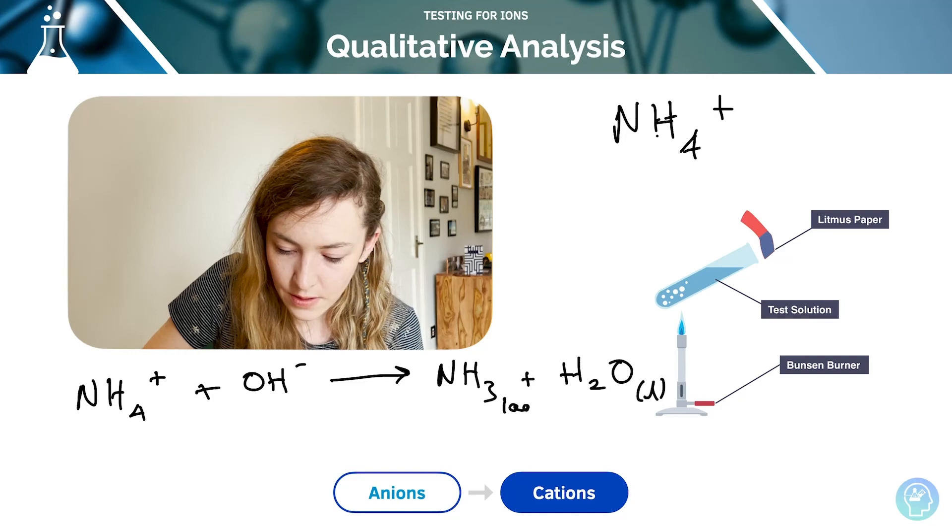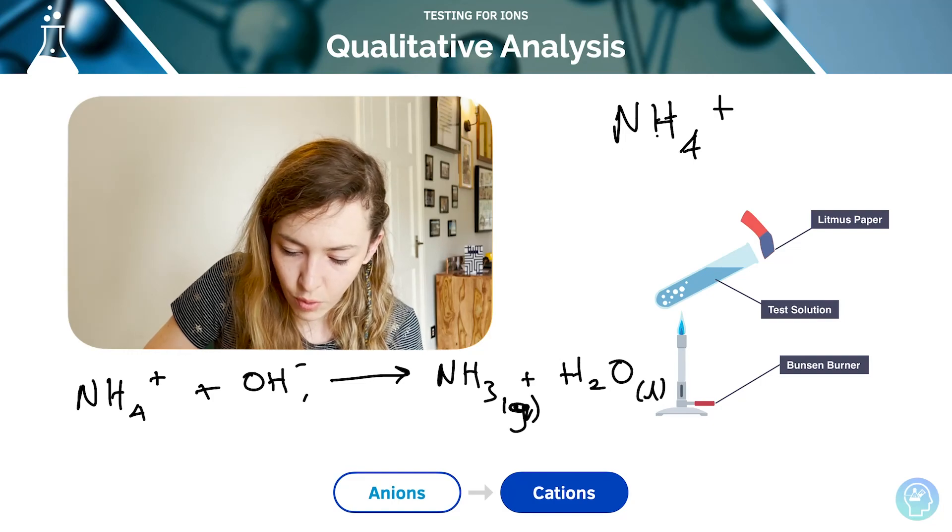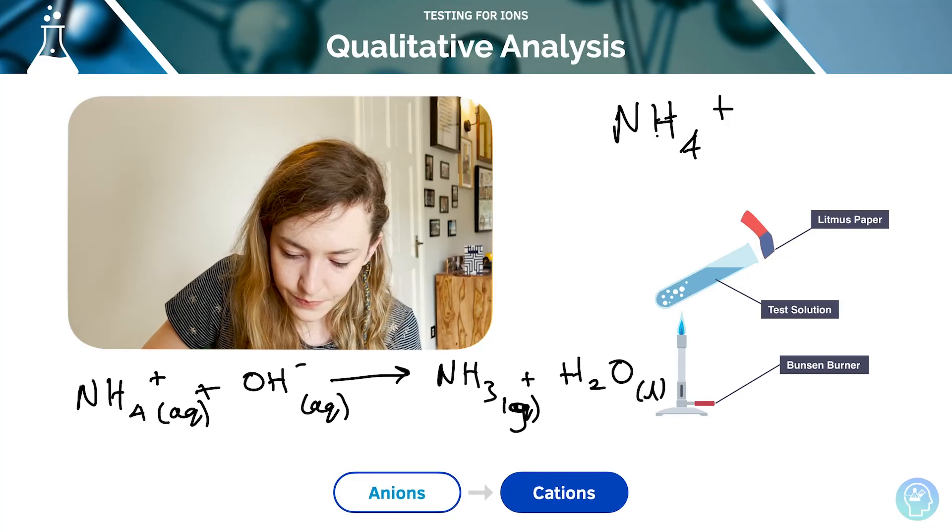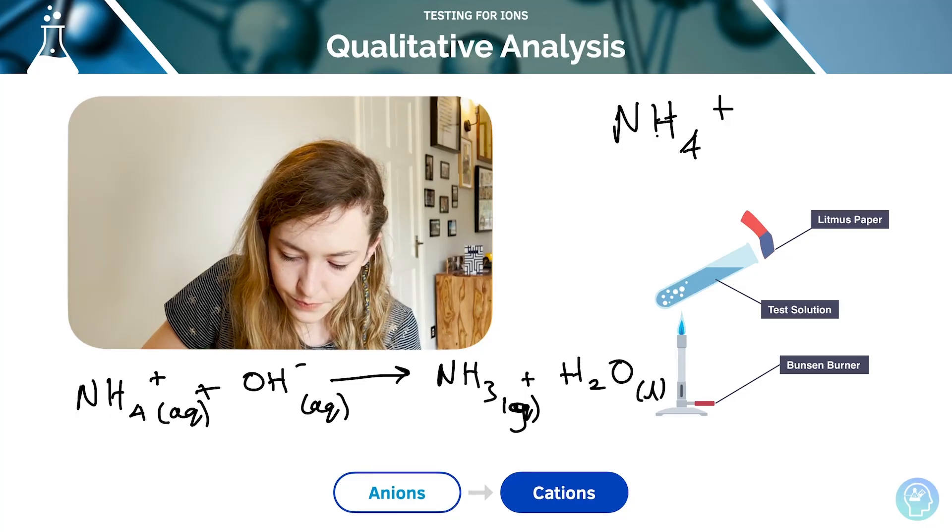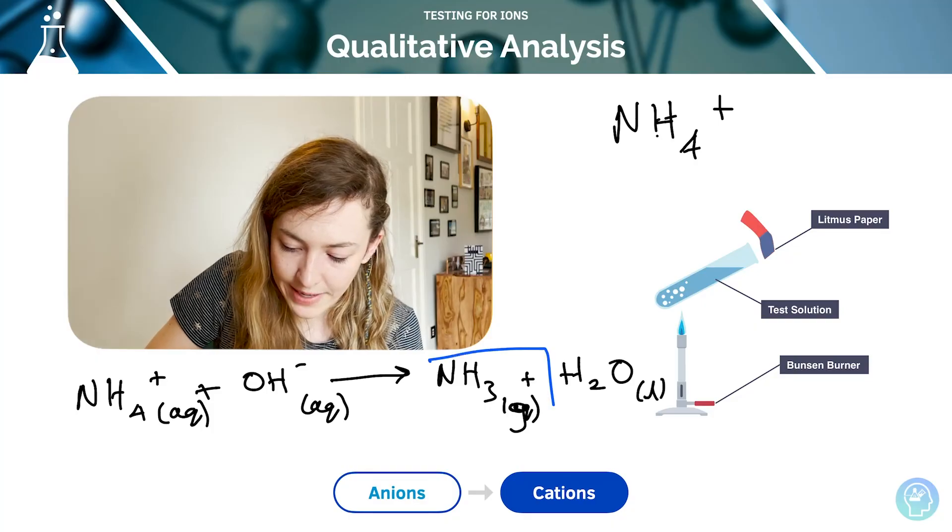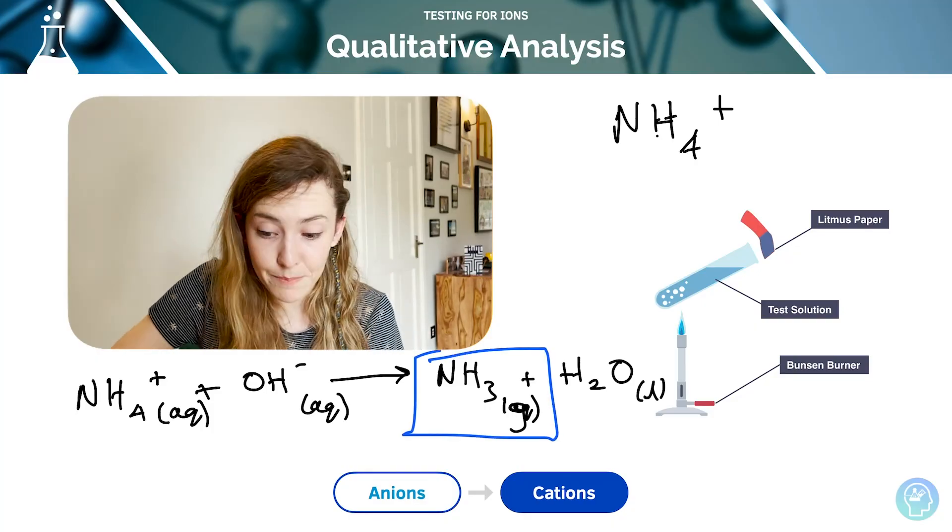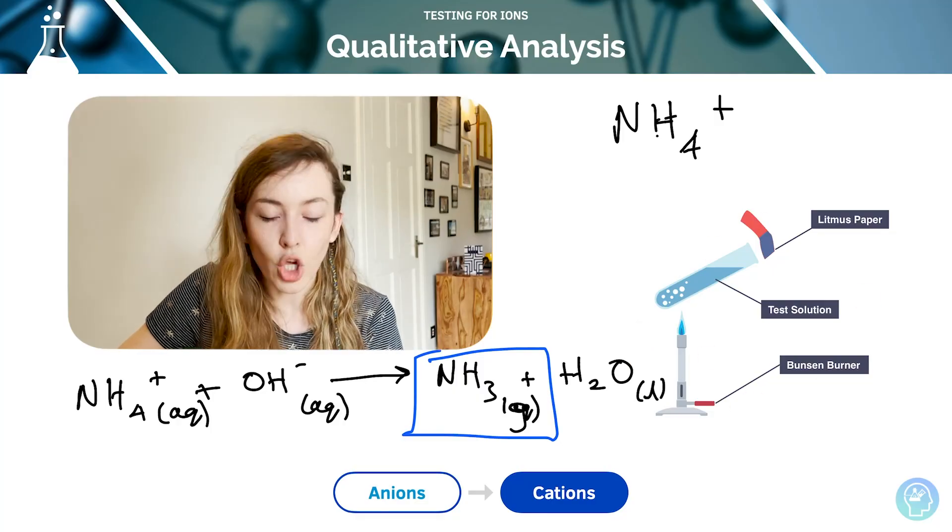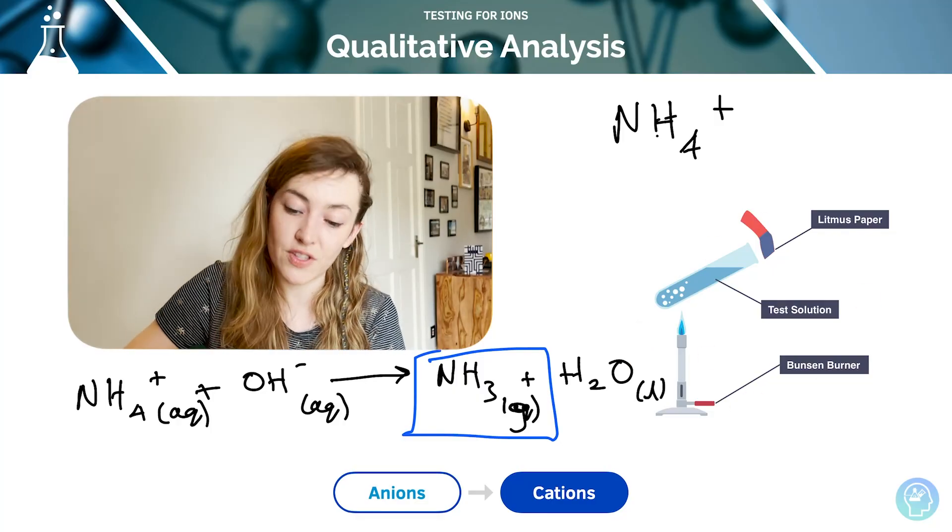That's liquid. That's going to be a gas, that's the whole point. That's going to be aqueous, and that's going to be aqueous. This is what's going to turn red litmus paper, damp red litmus paper blue. You can see a setup for that experiment here. You often hang the litmus paper just over the edge of the test tube.